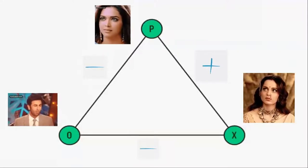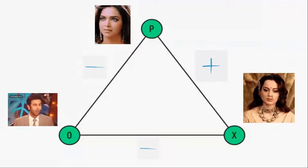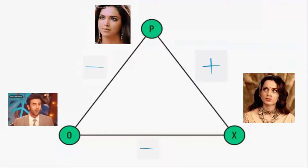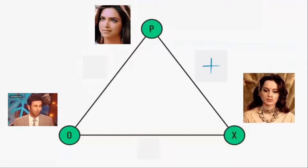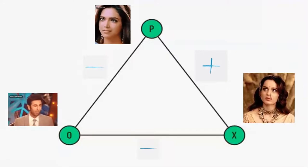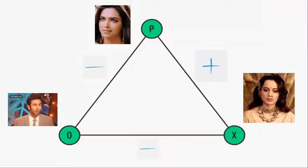My enemy's enemy is my friend. So Dipika's enemy is Ranbir. Ranbir does not like Kangana, so Dipika becomes close to or starts liking Kangana.